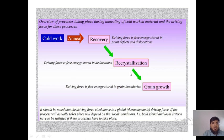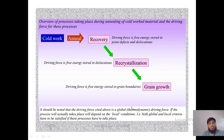For recrystallization, the driving force is the free energy stored in the dislocations. The energy stored in dislocations acts as free energy, causing atoms to recrystallize and rearrange through those gaps. For grain growth, the driving force is the free energy stored in the grain boundaries. Because of recrystallization, atoms are arranged in a different structure, and the grain boundaries become disturbed — that disturbed free energy creates new boundaries.